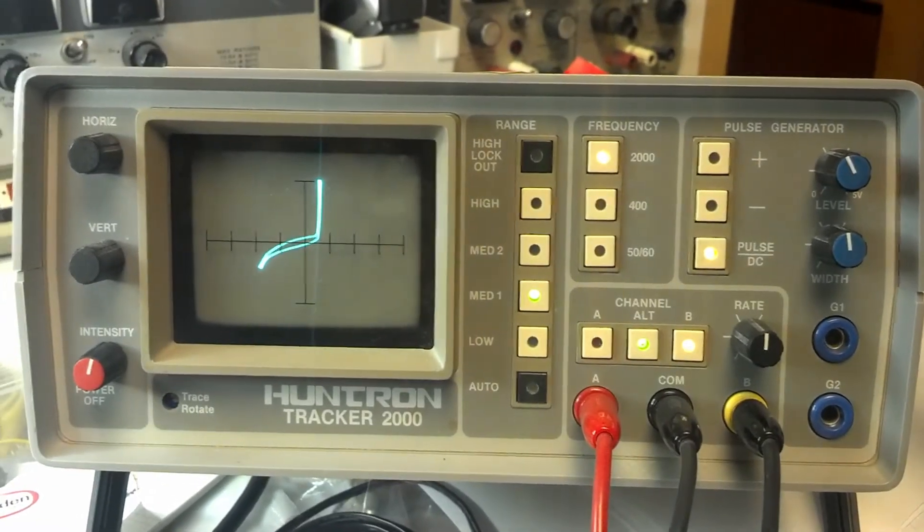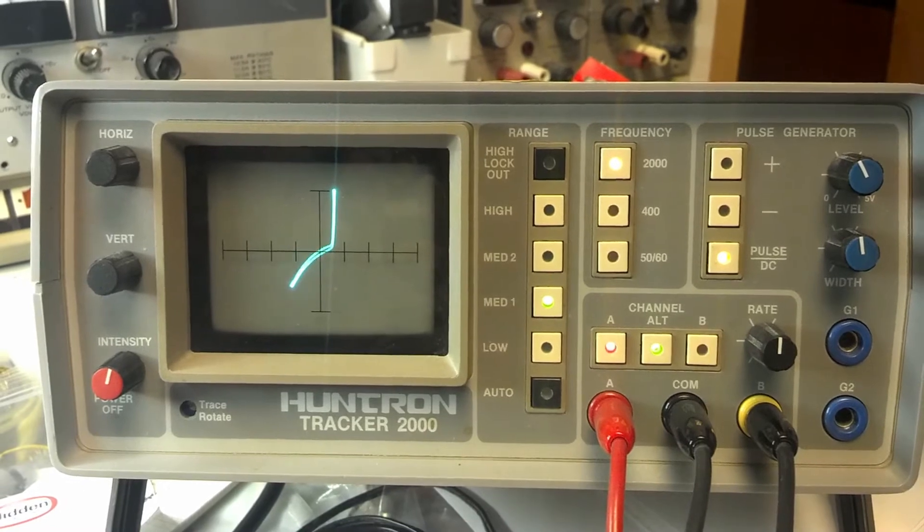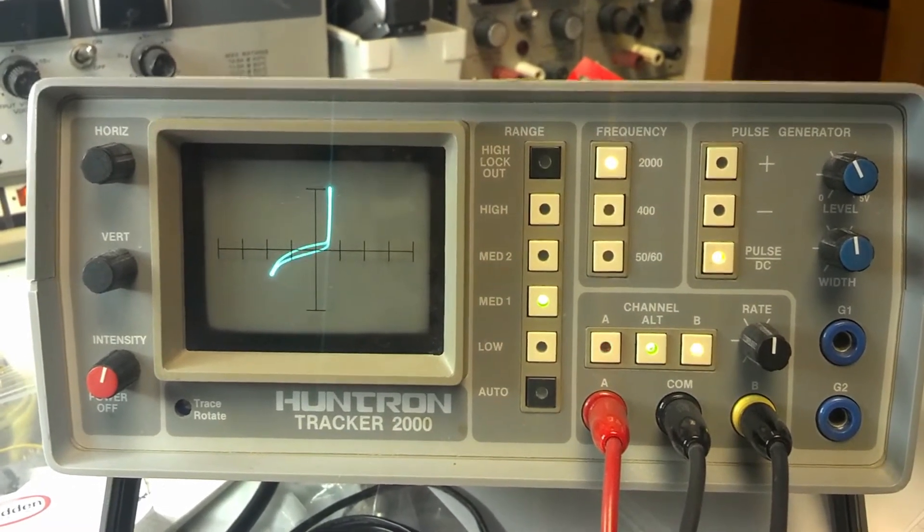We're using a Huntron tracker, which is a comparator. It does a Lissajous pattern of the different components.